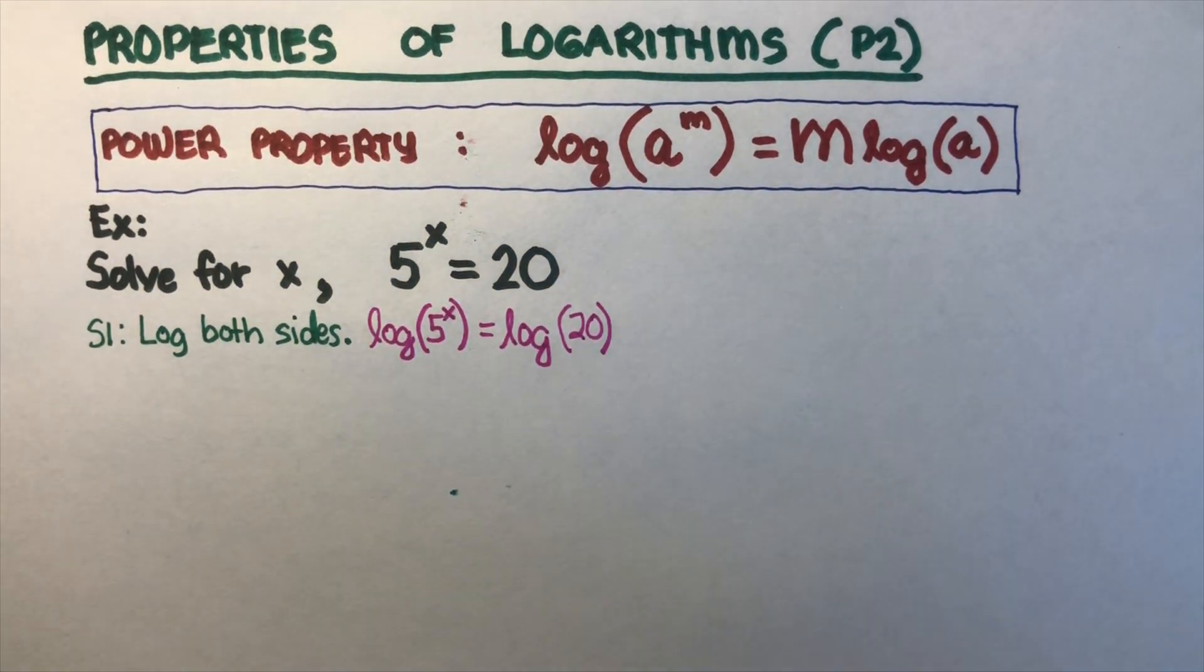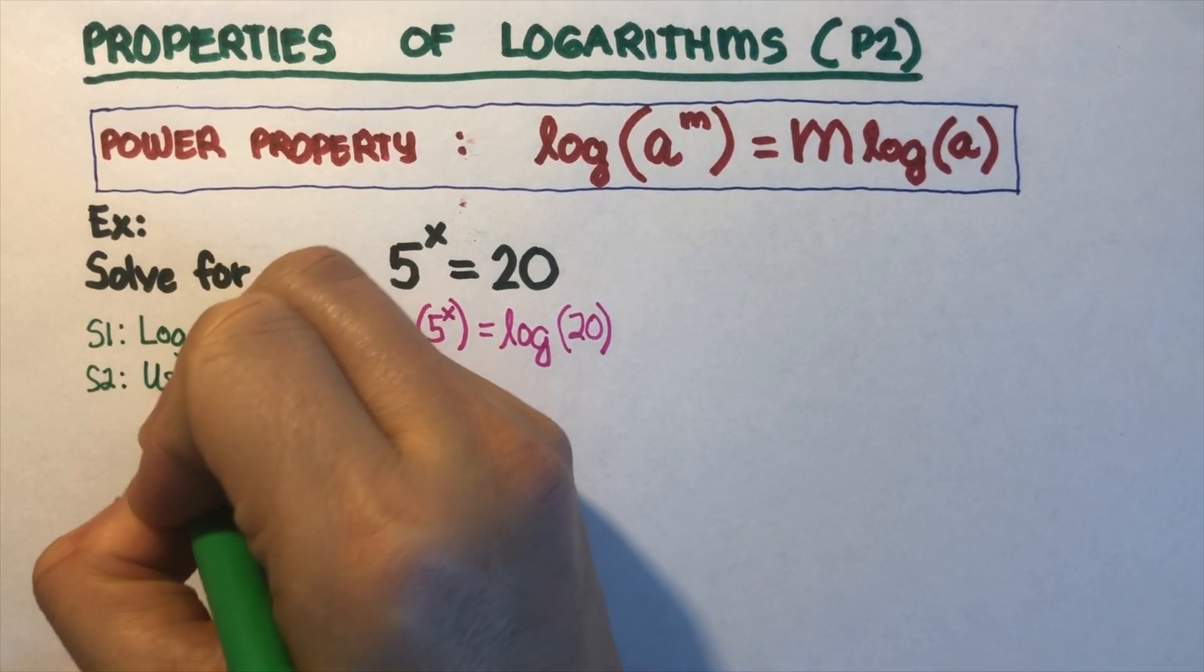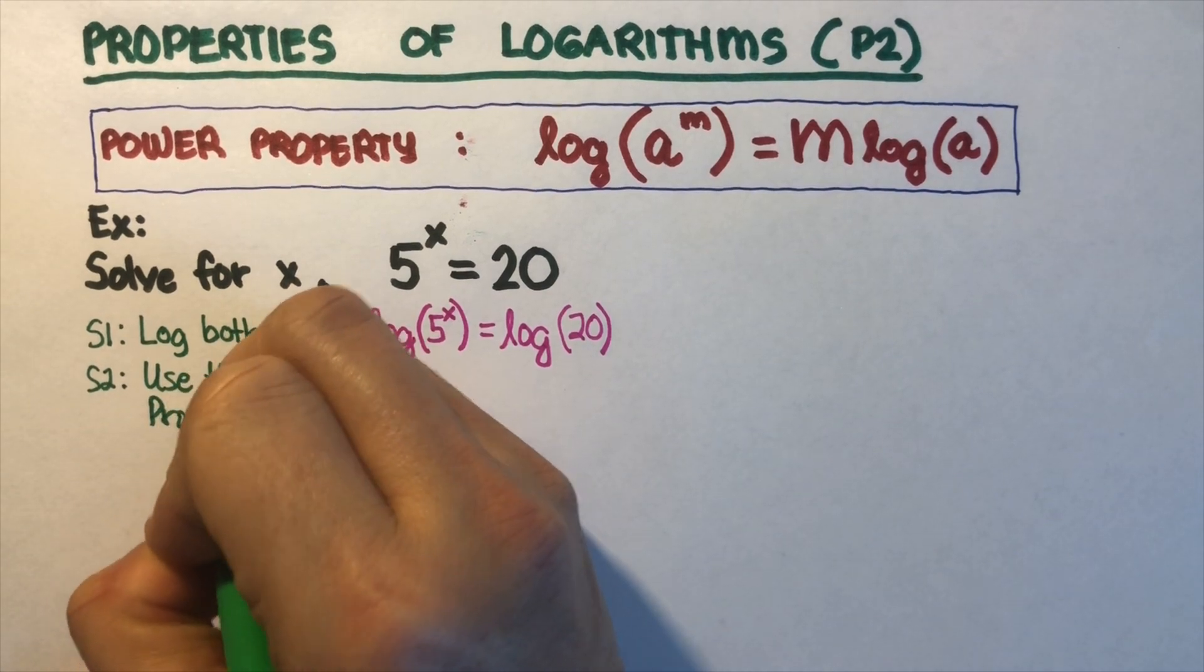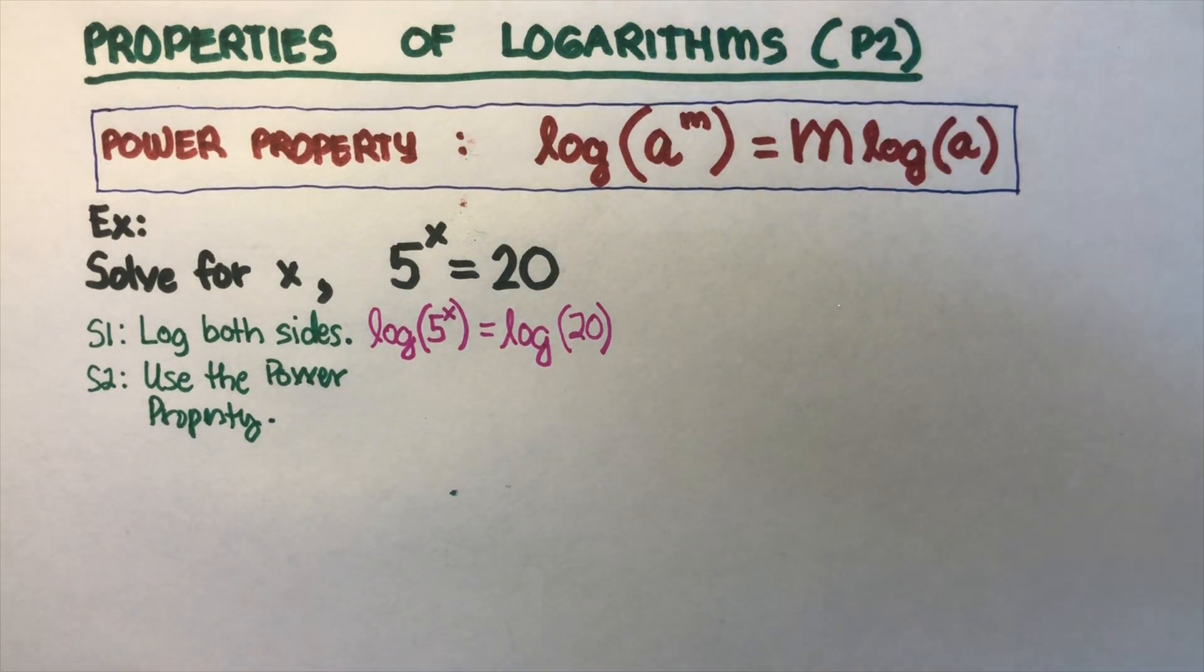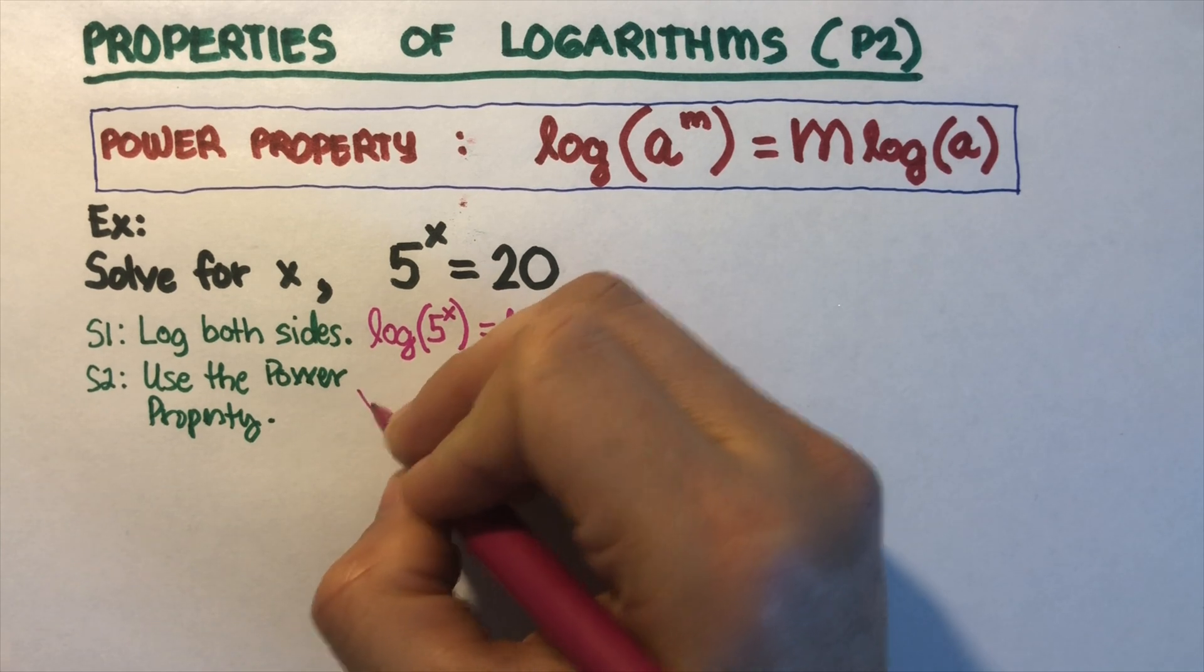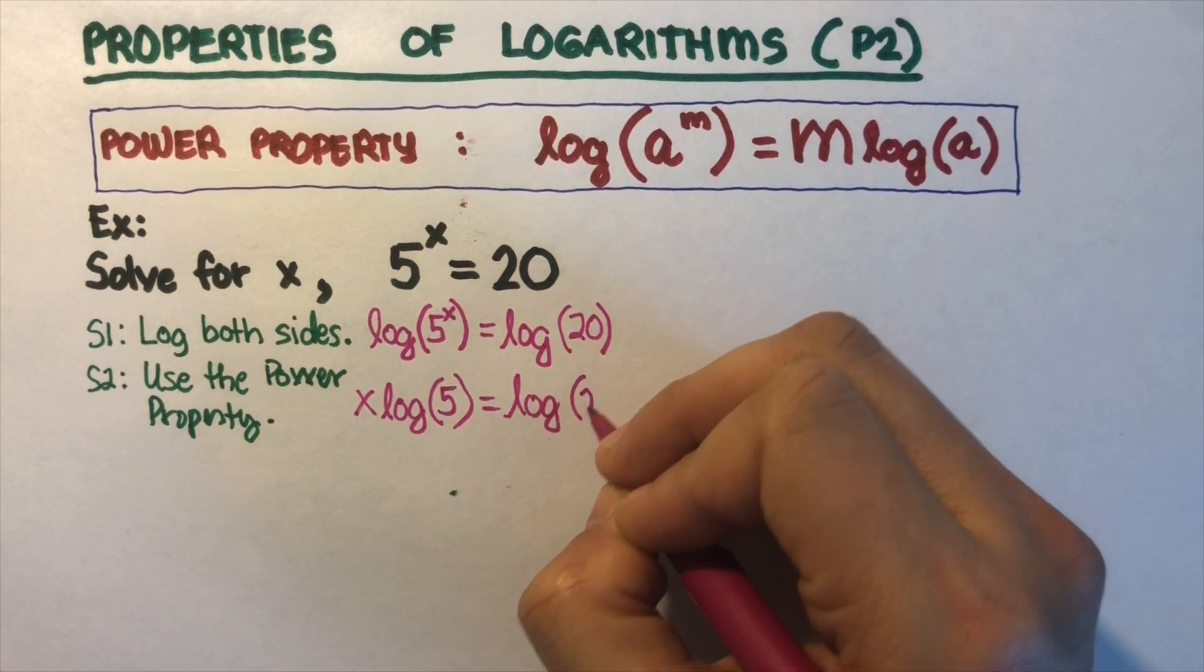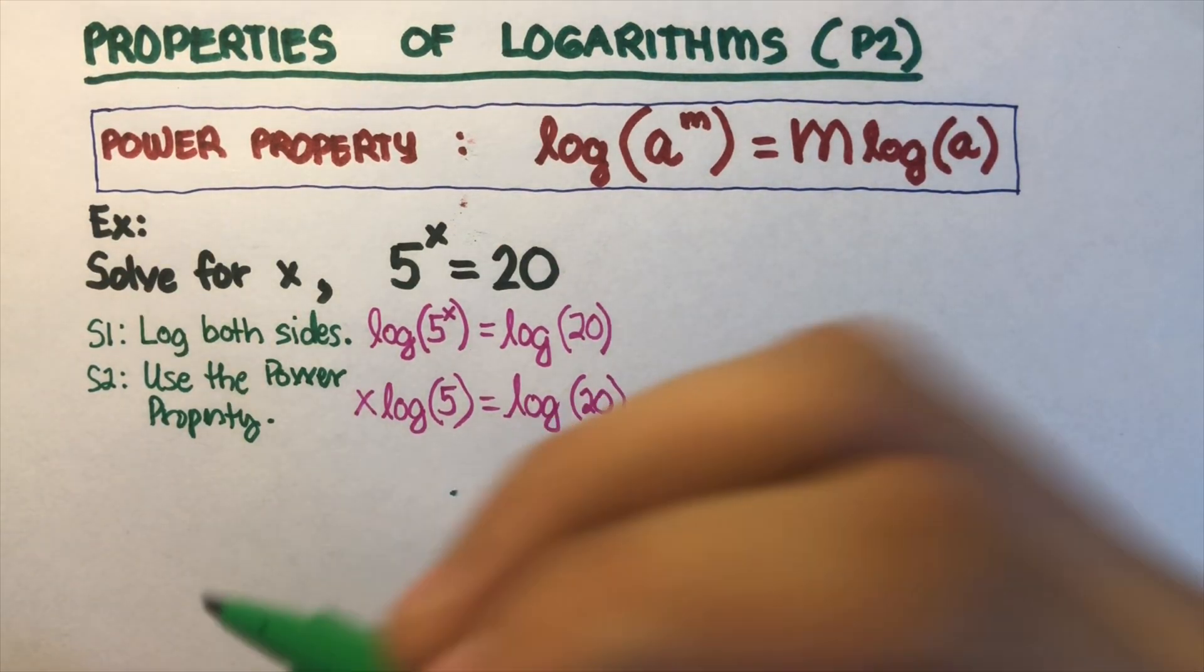Now the second step is to use the power property. Use the power property to simplify. So in this problem right here, this equation would come out, the power is going to go to the front. So this becomes x log of 5 equals log of 20. So we already used the power property.